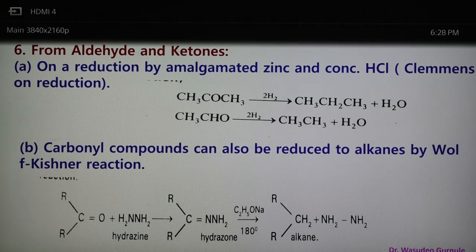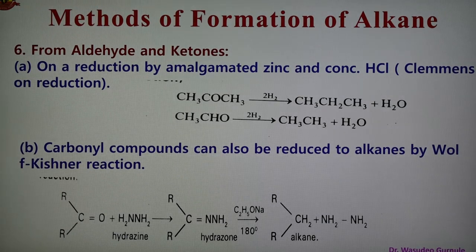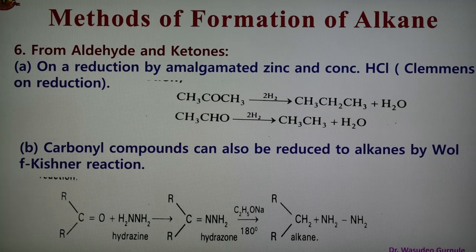Acetaldehyde (an aldehyde) also undergoes Clemmensen reduction. Two hydrogen atoms are added and water is released to give ethane. So in the Clemmensen reduction, two hydrogen atoms are added to the carbonyl compound and water is released. From acetone we get propane, and from acetaldehyde we get ethane. Alkanes can thus be obtained from aldehydes and ketones.